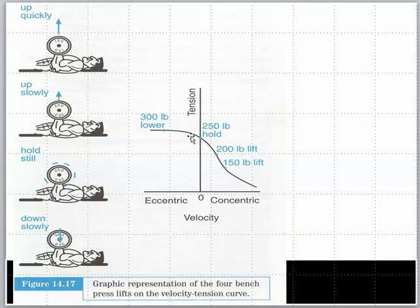They're illustrating you'd hold 250 pounds in an isometric contraction. But if you wanted to lower or do an eccentric contraction and control gravity, you could lower a much higher weight at the same fast velocity than you could lift.